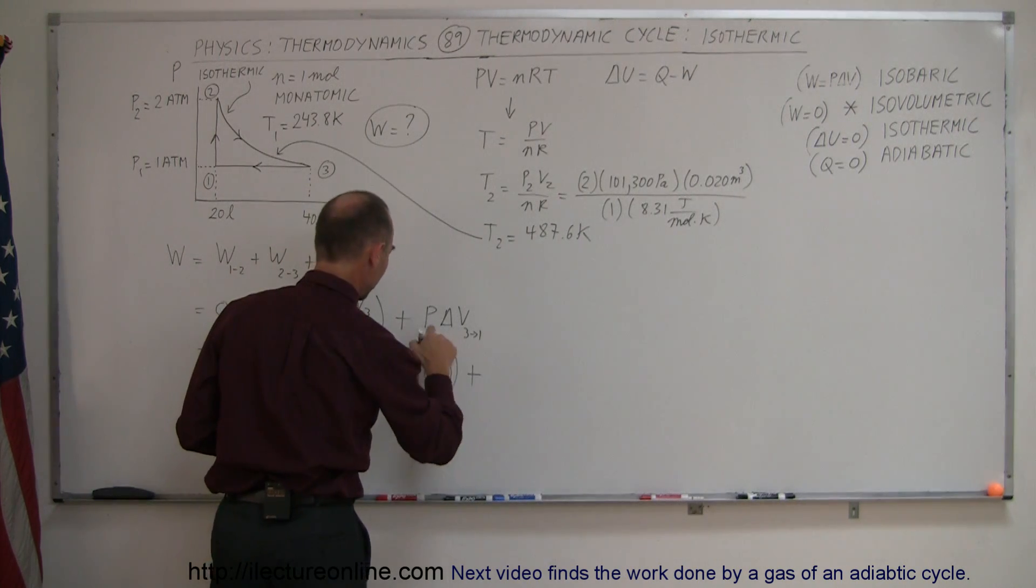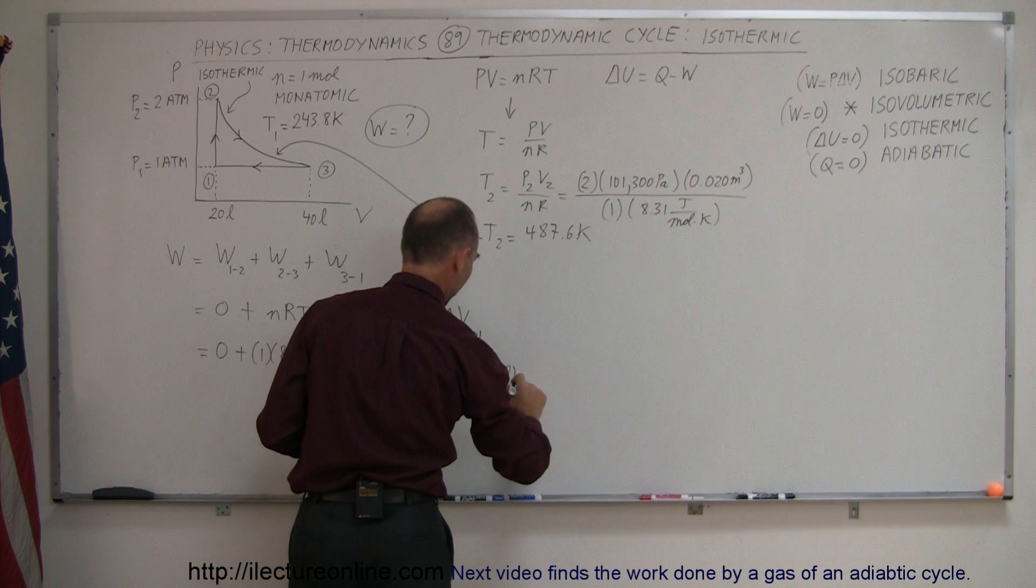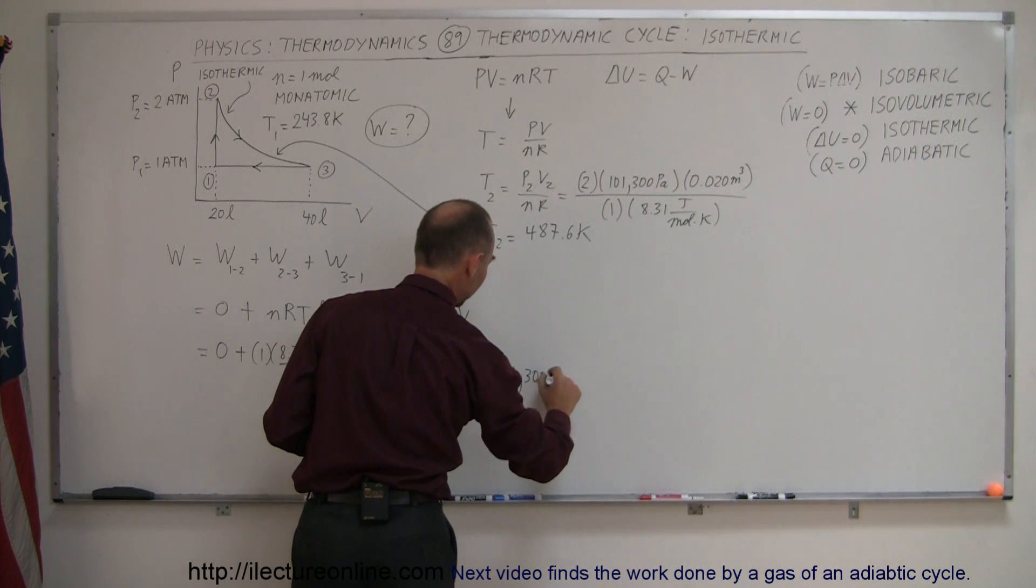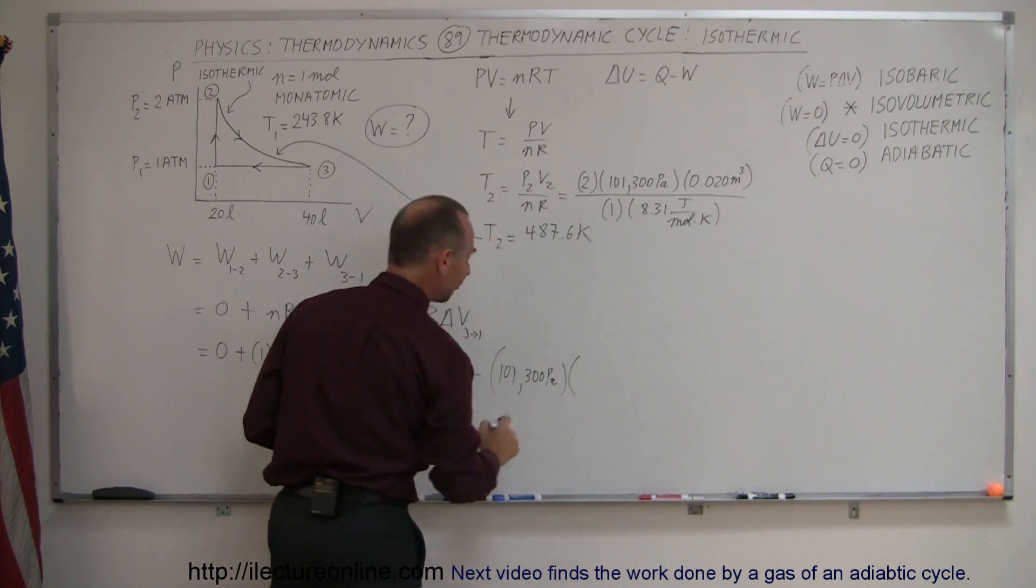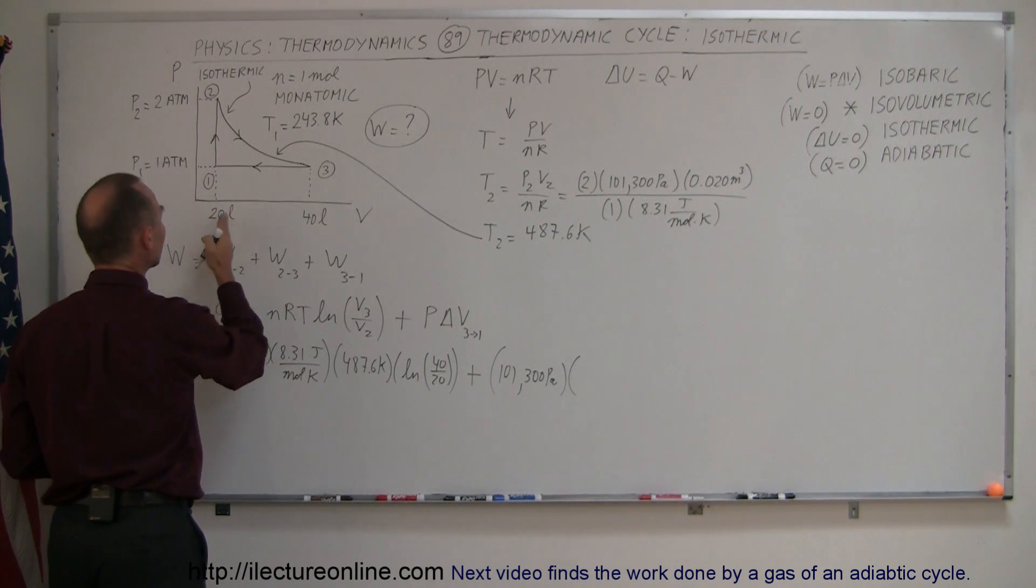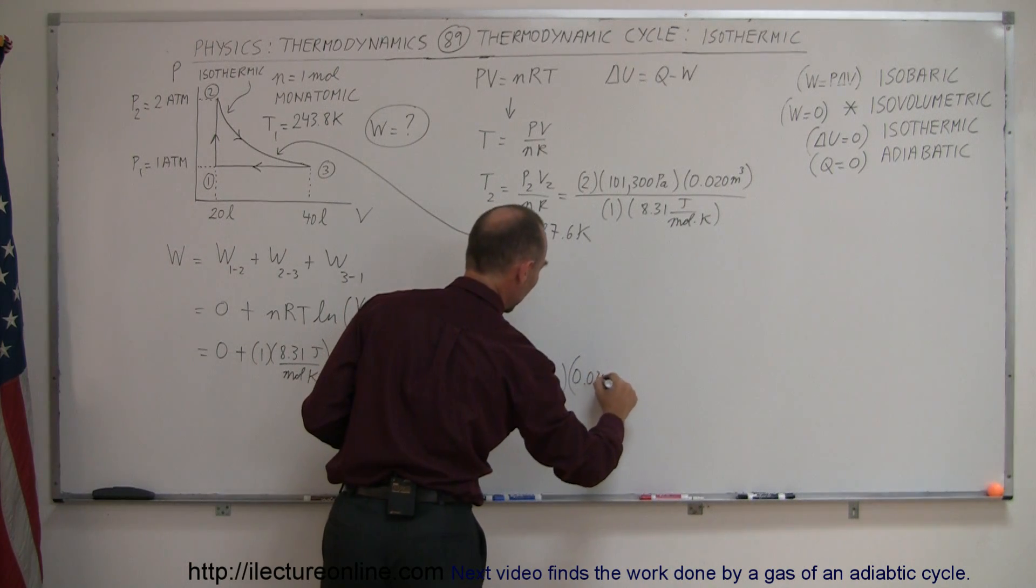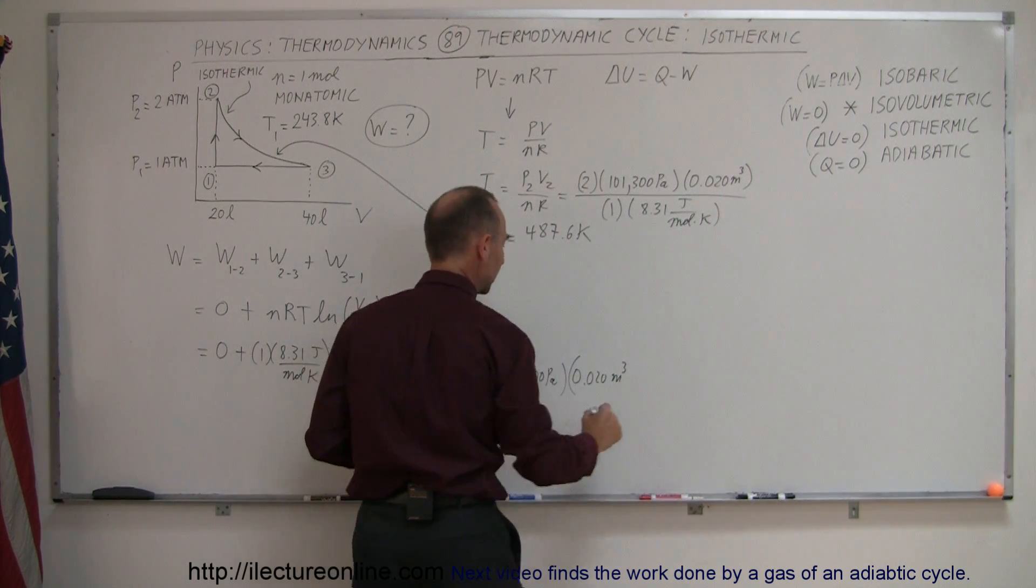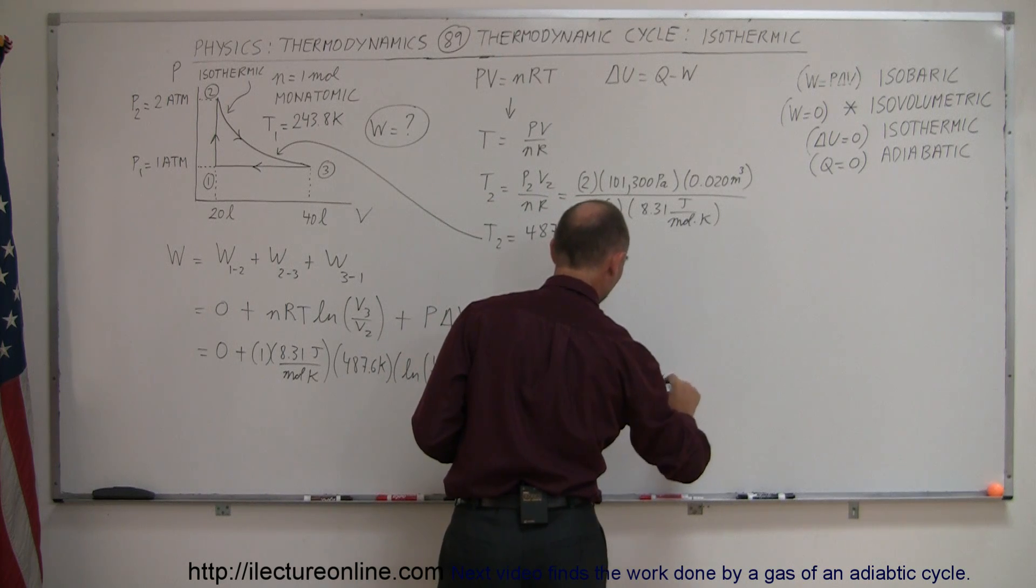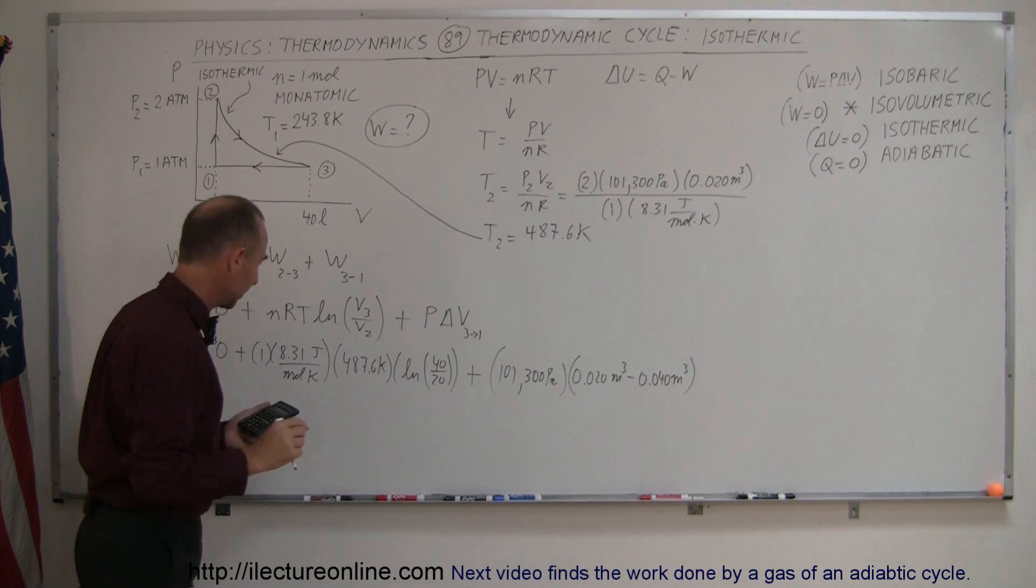And then finally plus the pressure from going from 3 to 1, which is one atmosphere, 101,300 pascals, times the change in the volume, which means final volume minus initial volume. That's 20 liters minus 40 liters, because we're going from right to left, so that's 0.020 cubic meters converted to cubic meters, minus 0.040 cubic meters. All right, so now we should be able to figure these out.